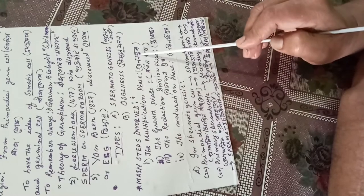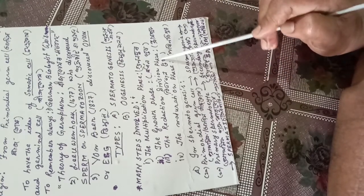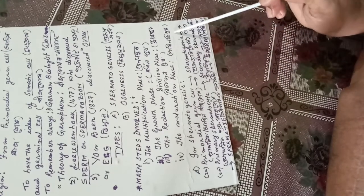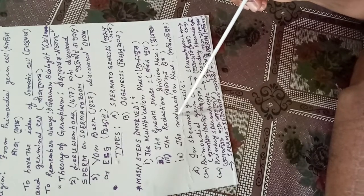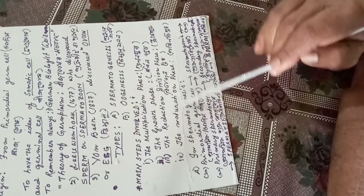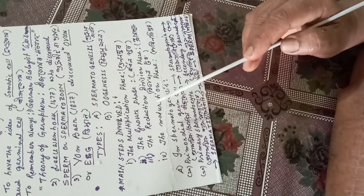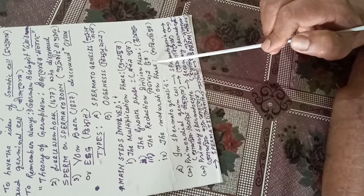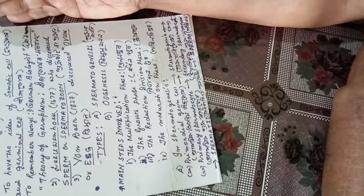Both spermatogenesis and oogenesis are found with these three main phases. Now we need to discuss elaborately these three main processes. In this part, try to be clear about the basic process of gametogenesis — its origin, its definition, the background about somatic and germinal cells, and the scientists related to the discovery of sperm and ovum, namely Leeuwenhoek and von Baer, along with the discoverer of the theory of germplasm, Weismann.